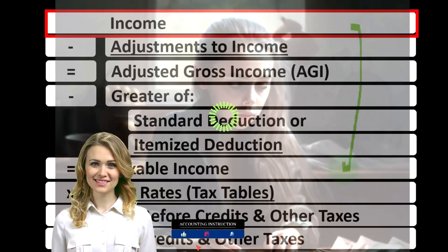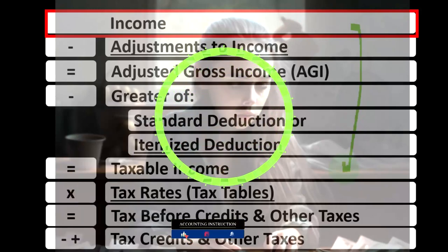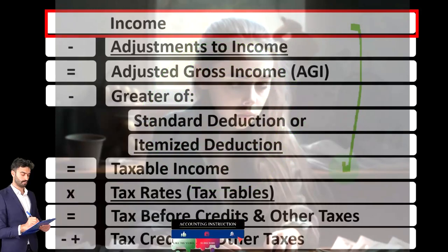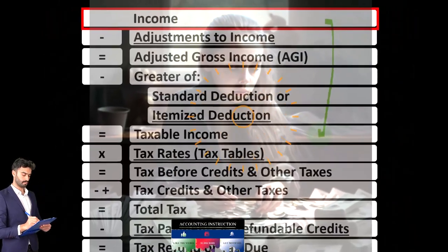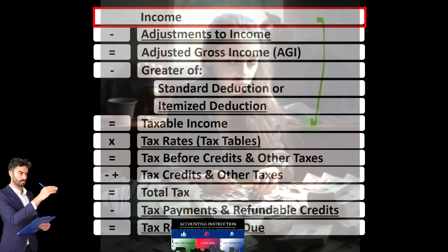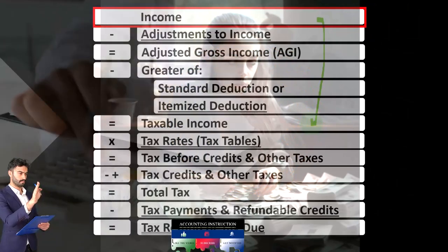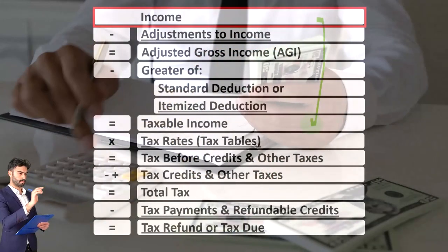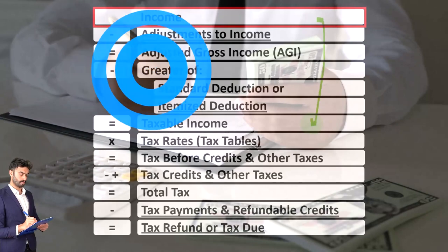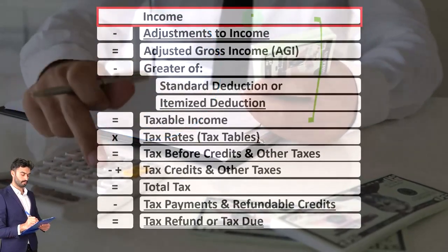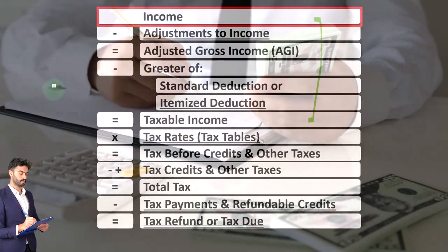Although just an outline or scaffolding with other form schedules flowing into these line items, one of those is the Schedule C, which is, in essence, an income statement in and of itself, having business income minus business expenses, with the net business income rolling into Line 1 income here of the income tax formula.